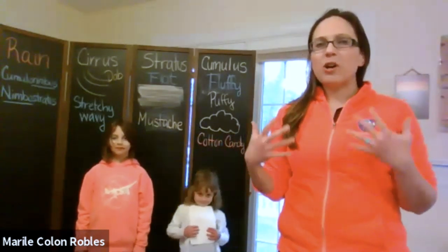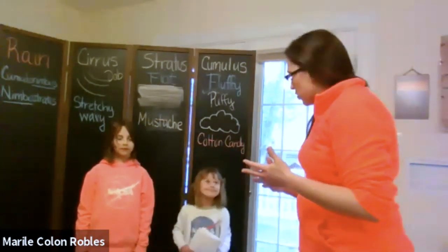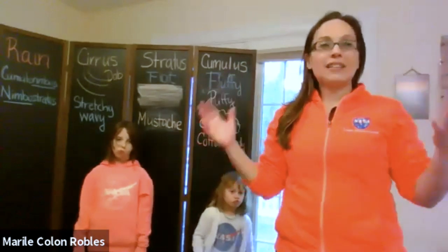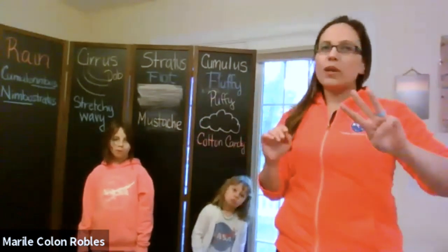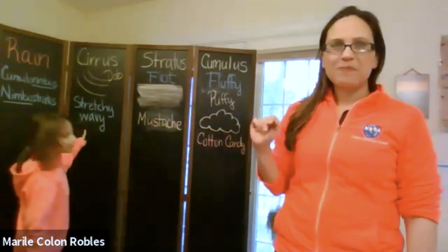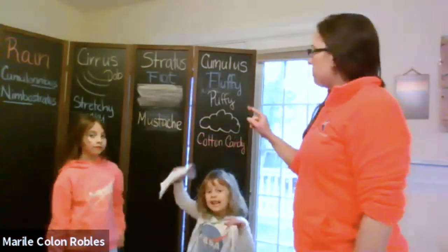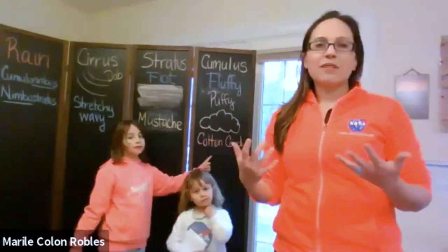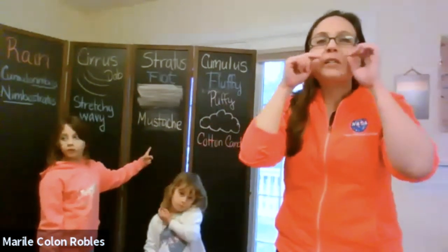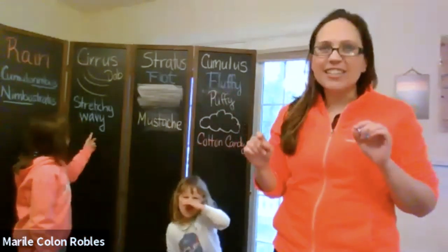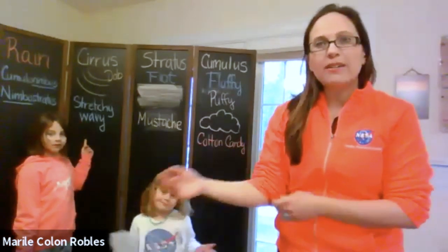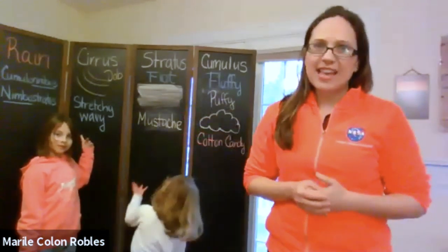One of our favorite things is what we call the cloud dance. Are you girls ready to show the cloud dance? So before we begin, there are three main cloud types — cumulus, stratus, and cirrus. Cumulus are puffy; kids sometimes say fluffy or cotton candy. Stratus are flat; some kids say it looks like a mustache. And then cirrus — wavy, stretchy. We adults might say wispy, but kids don't really understand wispy.